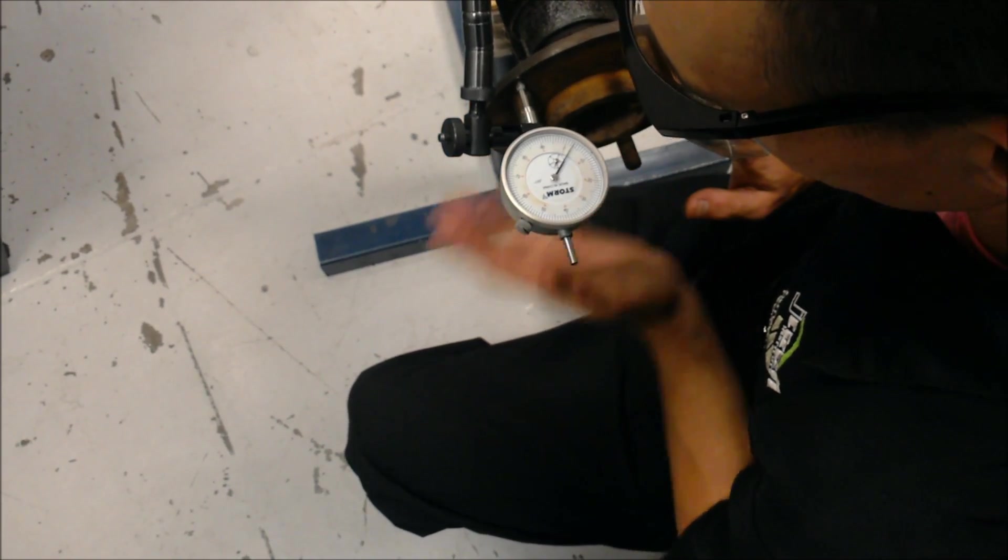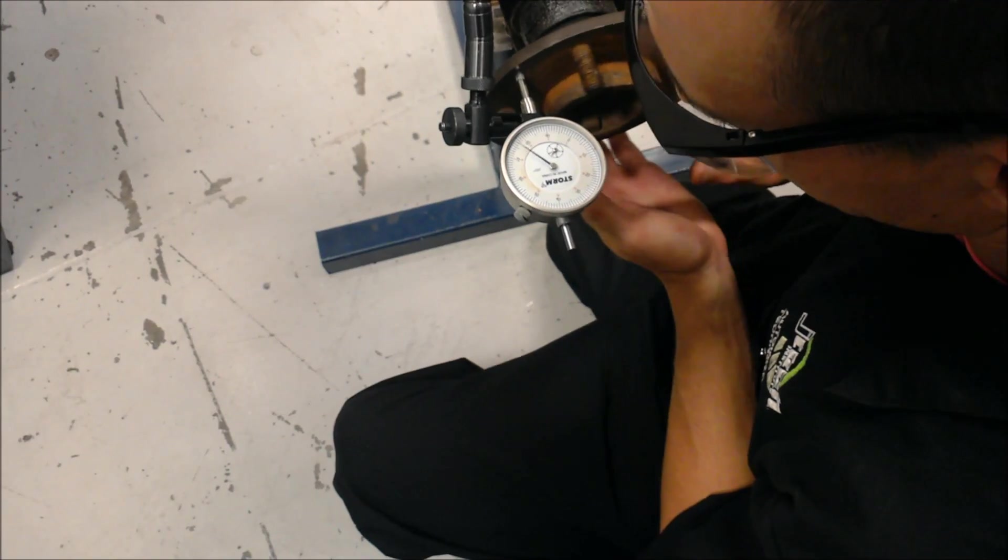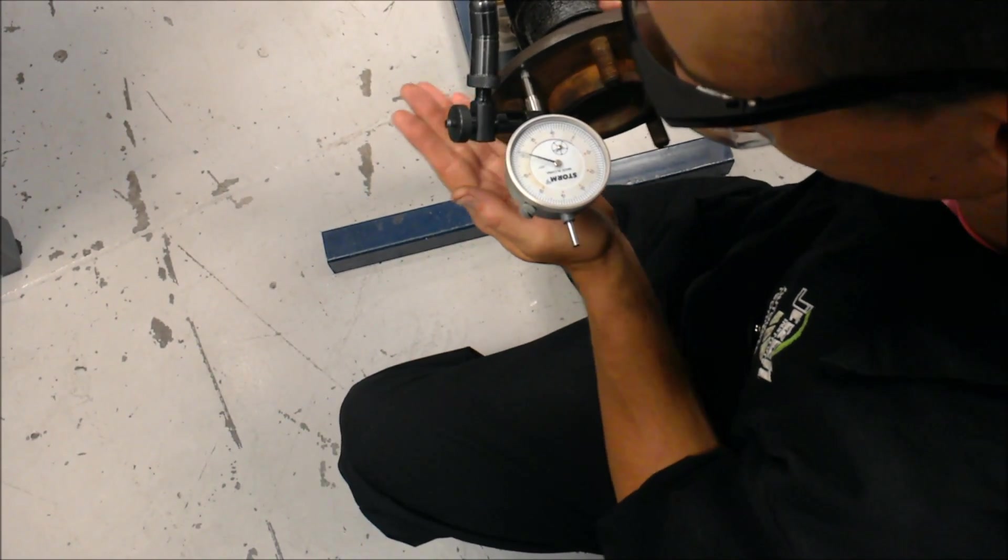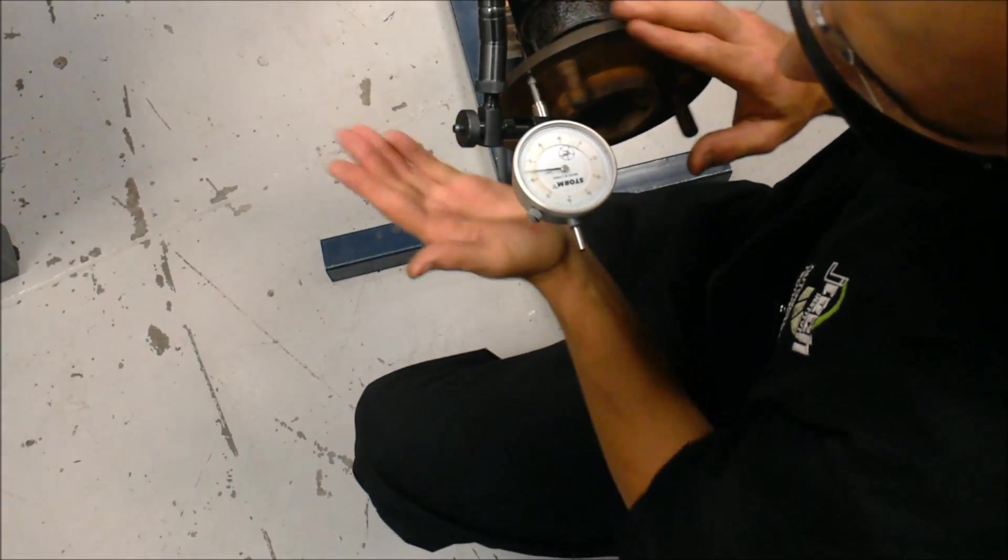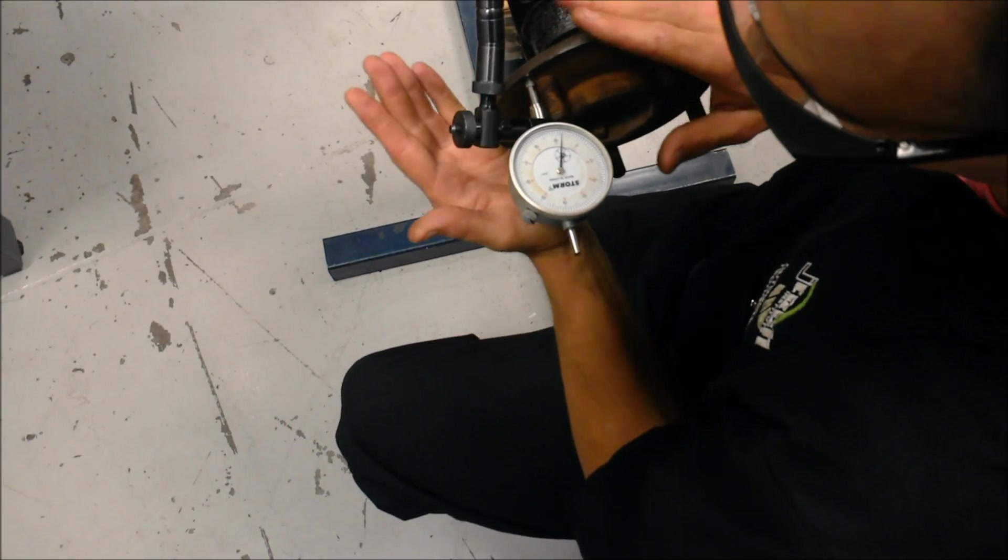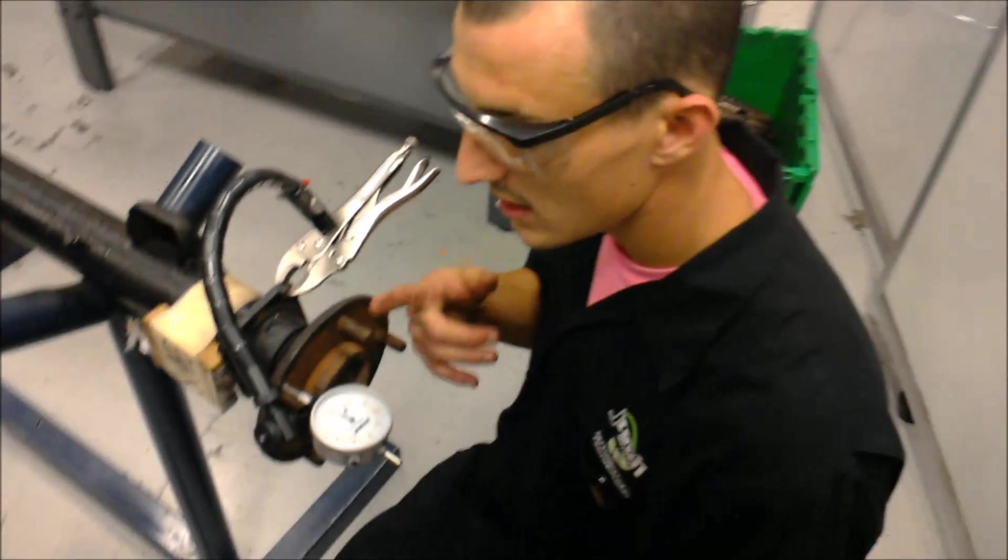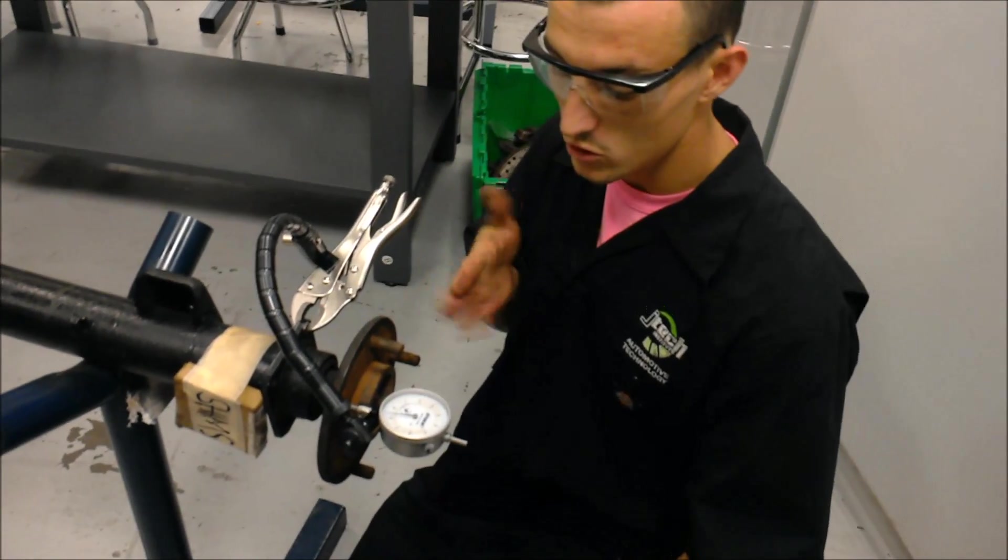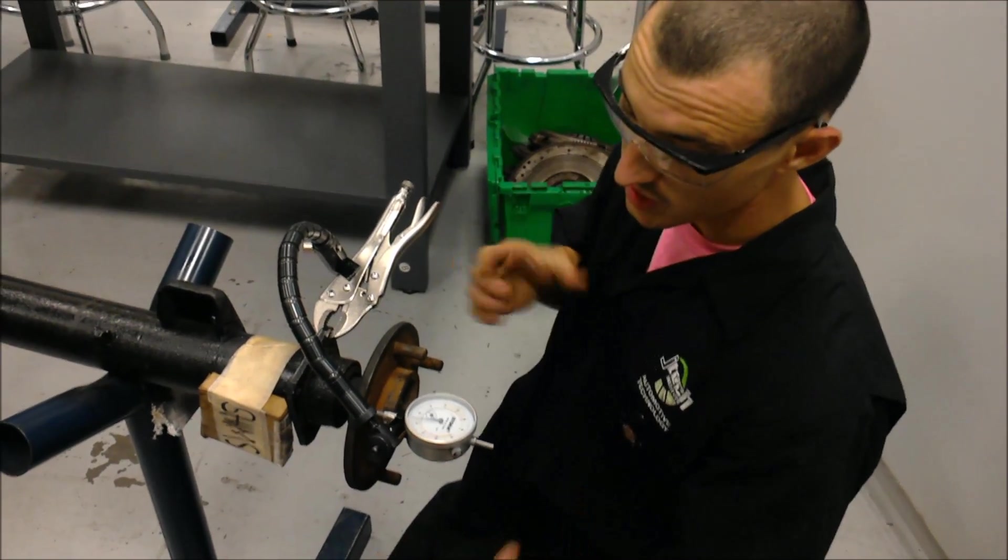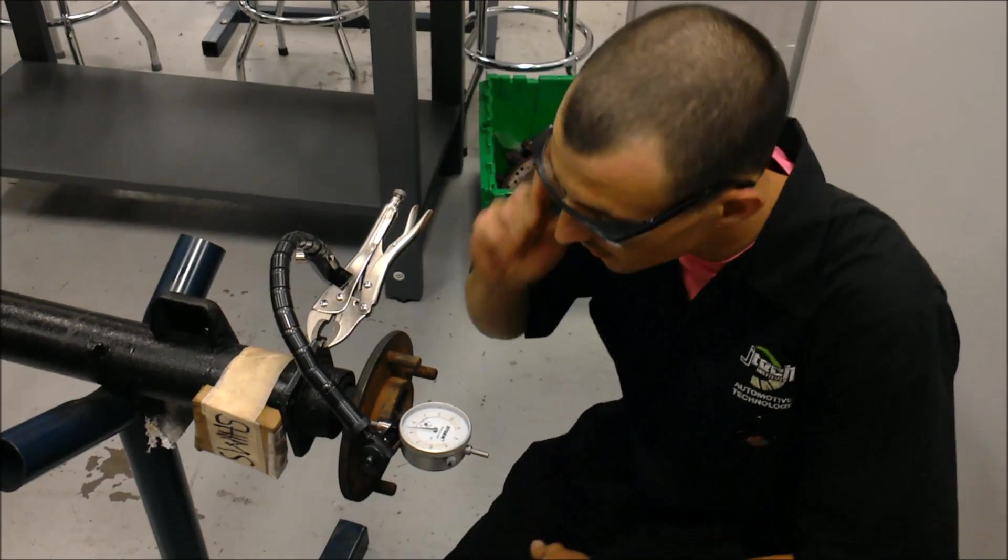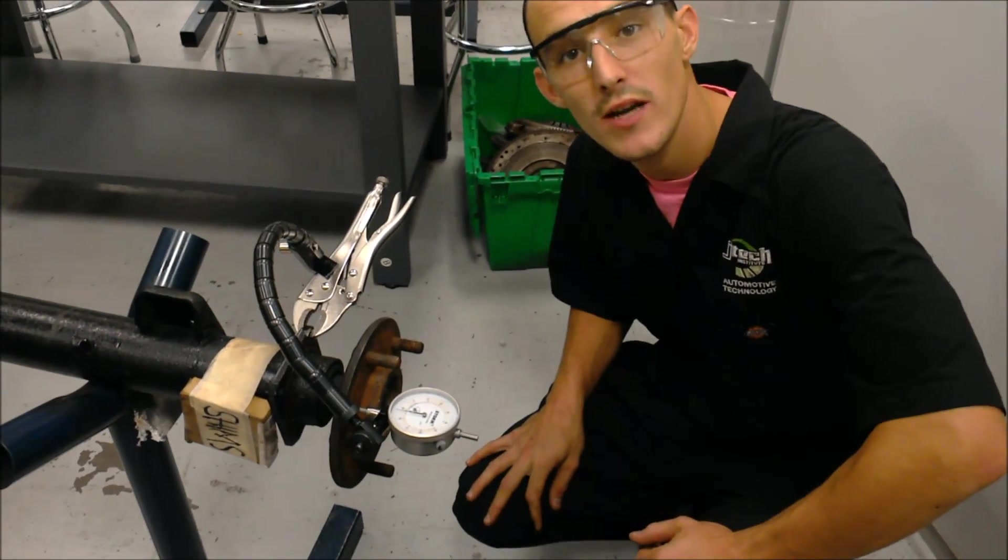Zero. Oh actually, this thing has just over 30 thousandths run out. That's like 32 thousandths run out. Which I can tell you already, actually I think it's 35 thousandths run out, which is way over spec. So this would actually cause some vibration in your tire if you were to drive on this axle. So you'd get some vibration. And you might think it's the tire, you might think it's the brakes causing the vibration, but in fact it was just the axle flange. And that's how you measure axle flange run out.